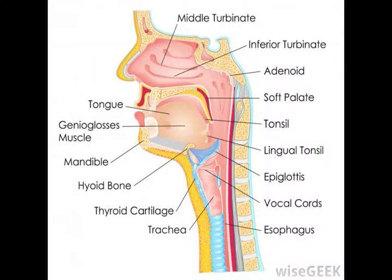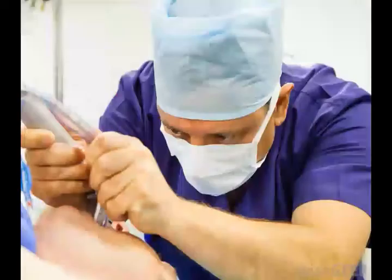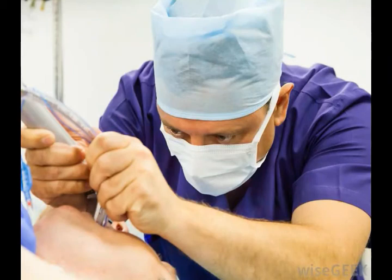An epiglottis is an anatomical structure that is designed to prevent animals from inhaling foods or liquids while they eat and swallow. You could think of it as a lid or flap which covers the trachea, creating a seal that does not permit anything other than air to enter the trachea. This anatomical structure is very important, as without it, an organism would run the risk of choking and coughing every time it tried to eat.